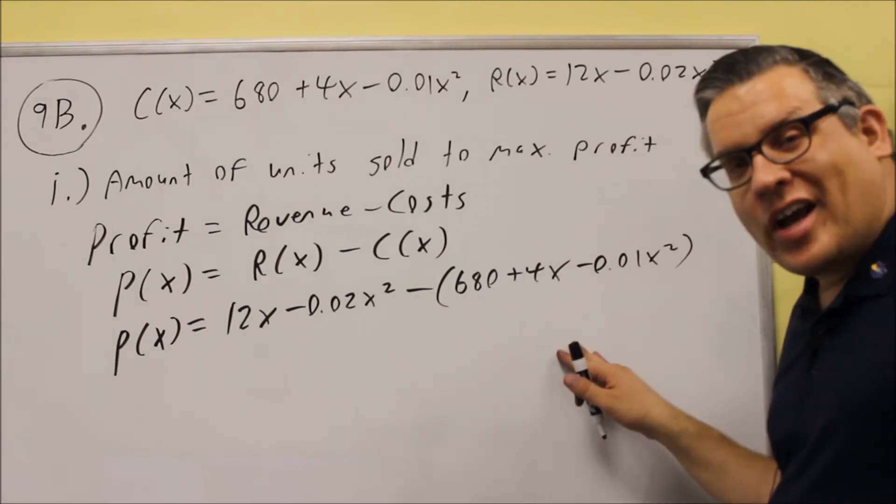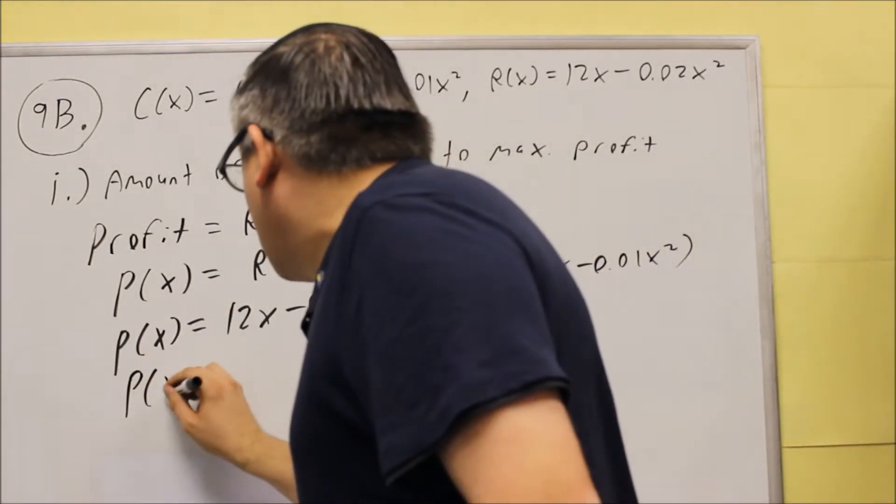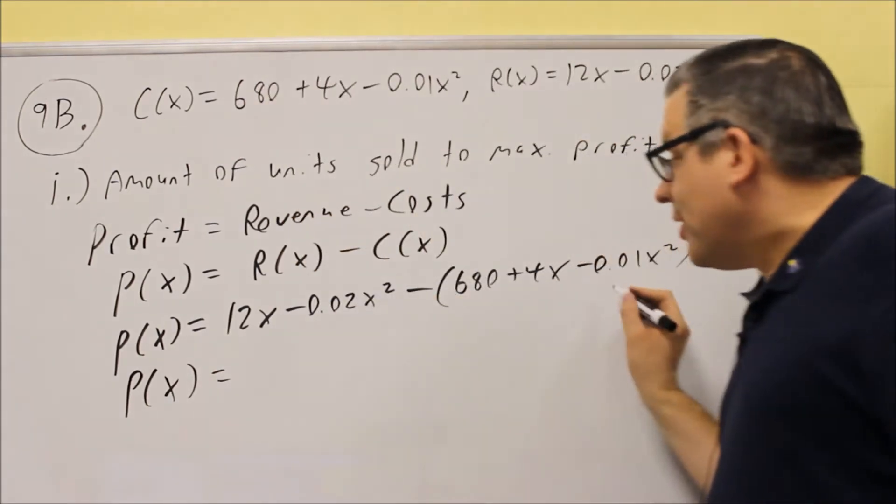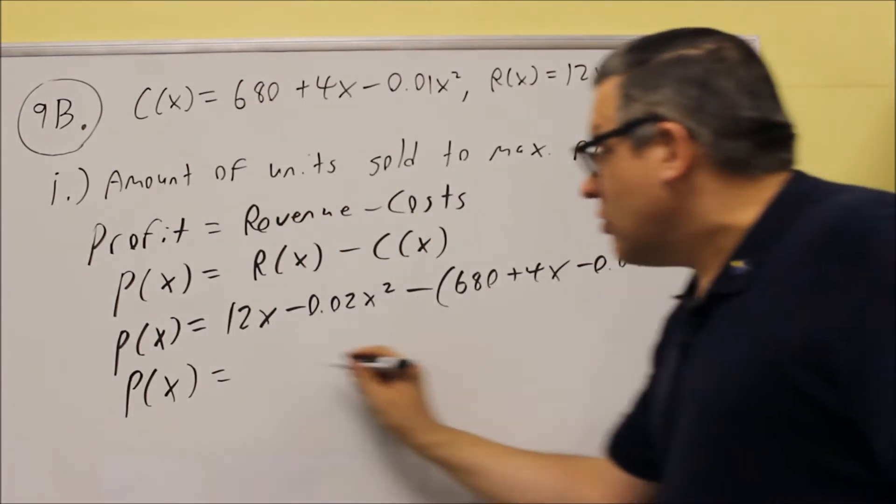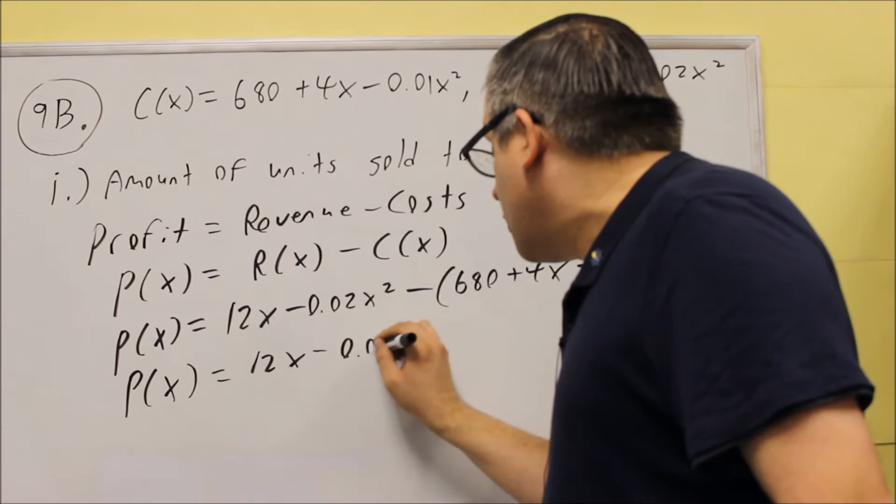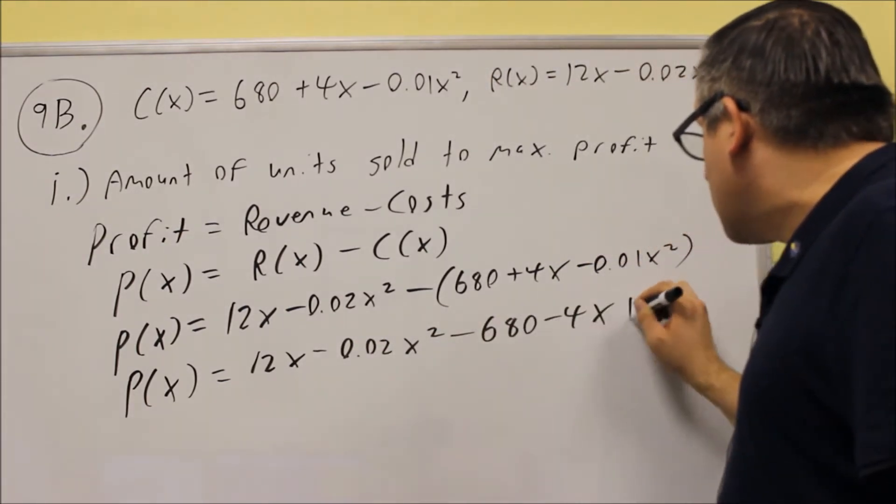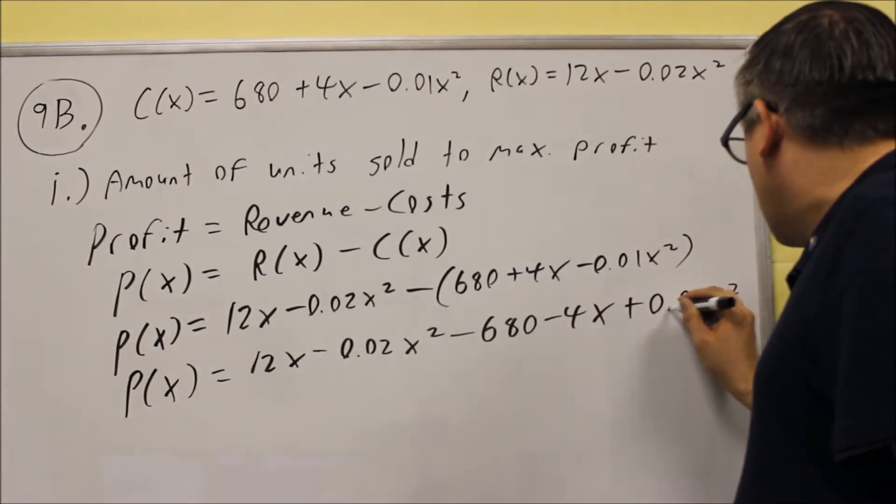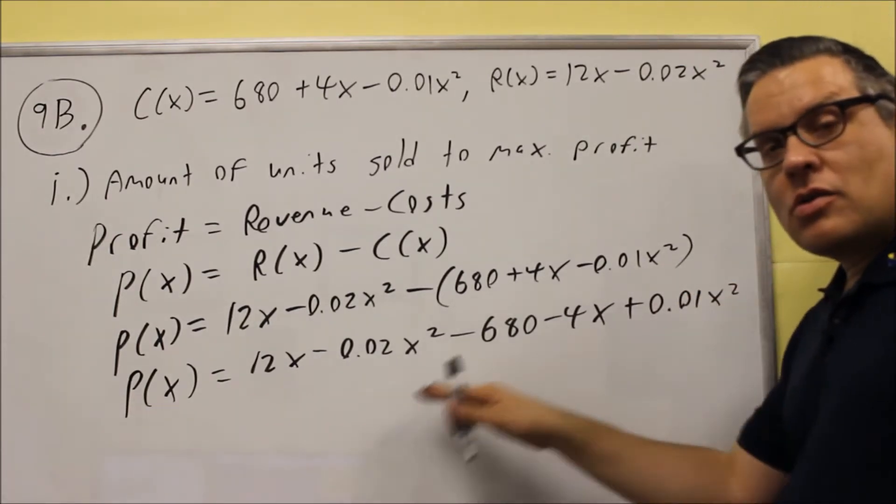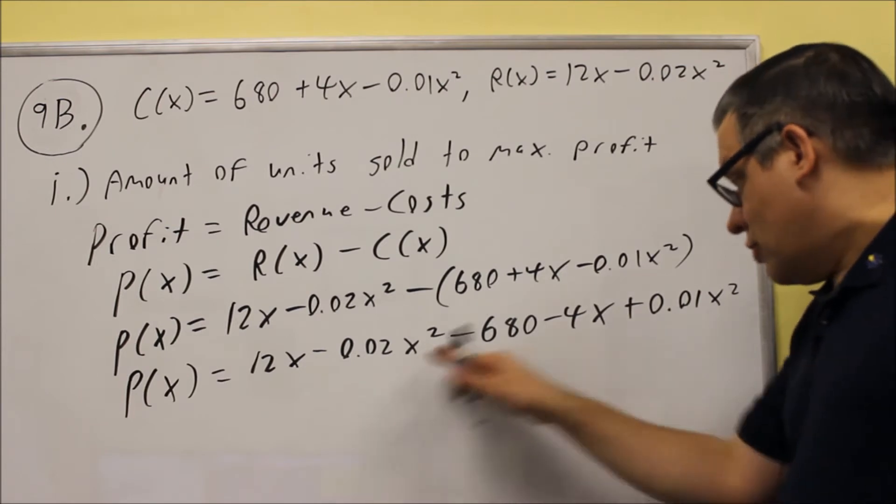So once we have all of this, we need to simplify it to get the profit function. So P(x), we're going to distribute the minus sign through, so we're going to do 12x minus 0.02x squared minus 680 minus 4x plus 0.01x squared.